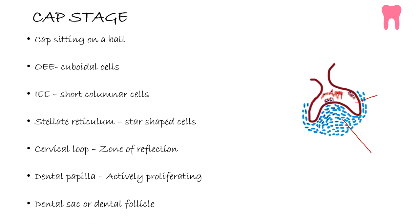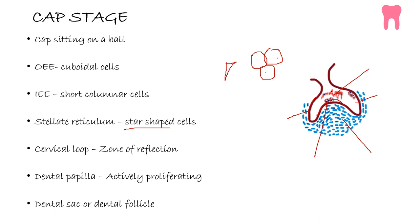The convexity of the cap is called the outer enamel epithelium and it has cuboidal cells. The concavity of the cap is the inner enamel epithelium and it has short columnar cells. Inside, there is the stellate reticulum. 'Stellate' means star-shaped, and they form a network of cells — hence stellate reticulum. The cells are polygonal in shape and they contain glycosaminoglycans. These glycosaminoglycans, when secreted extracellularly, absorb water from the ecto-mesenchyme.